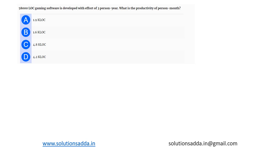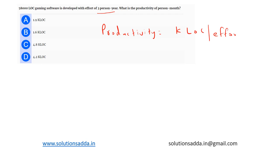This is a question from software engineering: 5800 lines of code gaming software is developed with an effort of three persons per year. What is the productivity per person per month? Productivity is calculated using the formula: productivity equals kilo lines of code divided by effort. It is given that we have 58,000 lines of code, which equals 58 kilo lines of code.